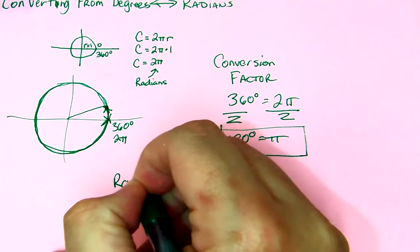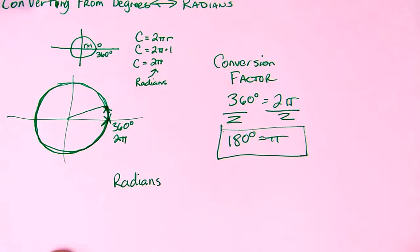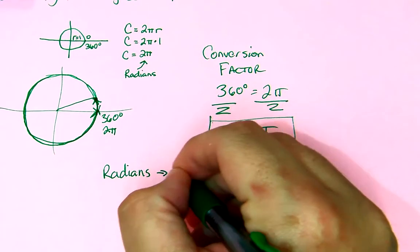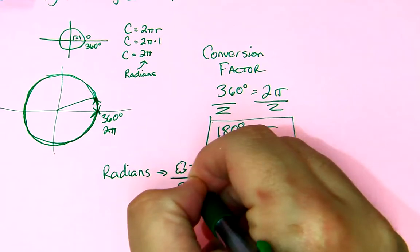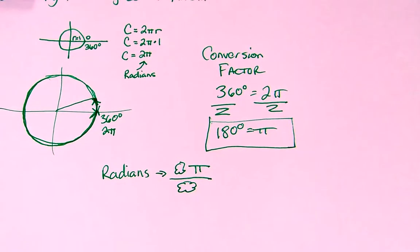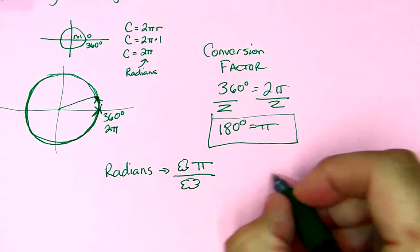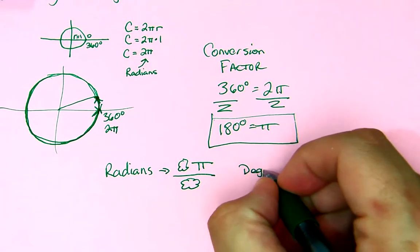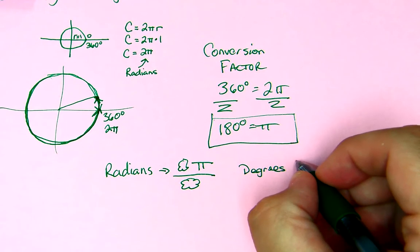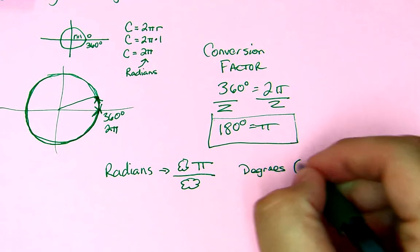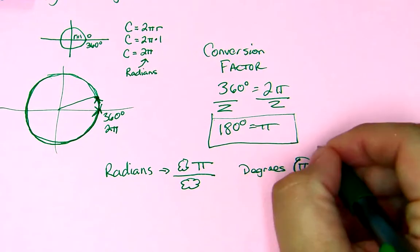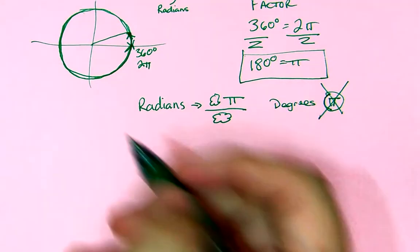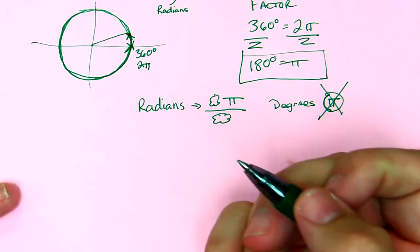Now, radians are always going to take the form of some number times π over some number. So, we want π in the numerator. Degrees, we don't want π at all. Degrees are like being on the diet. And so, π, we don't want that. So, the easiest way to do this is using a unit analysis of some kind.